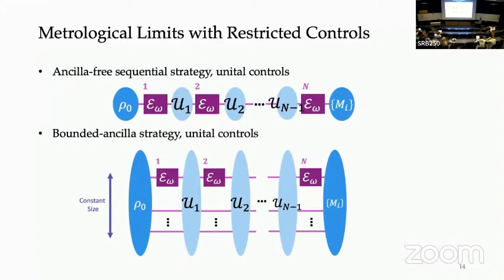Q: Is the ancilla-free sequential strategy similar to quantum error mitigation? Is there any connection? A: There might be some connection, but currently I don't see a direct application to error mitigation, because in my protocol the unknown parameter is in the quantum channel rather than in the initial input state. There is a distinction, but perhaps some connection exists.